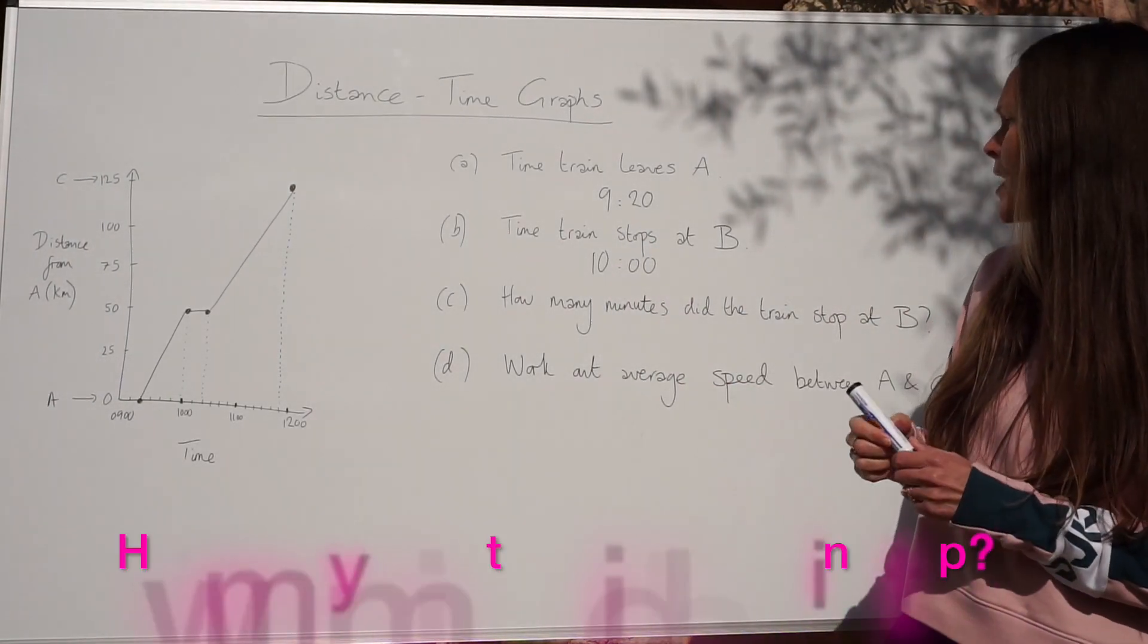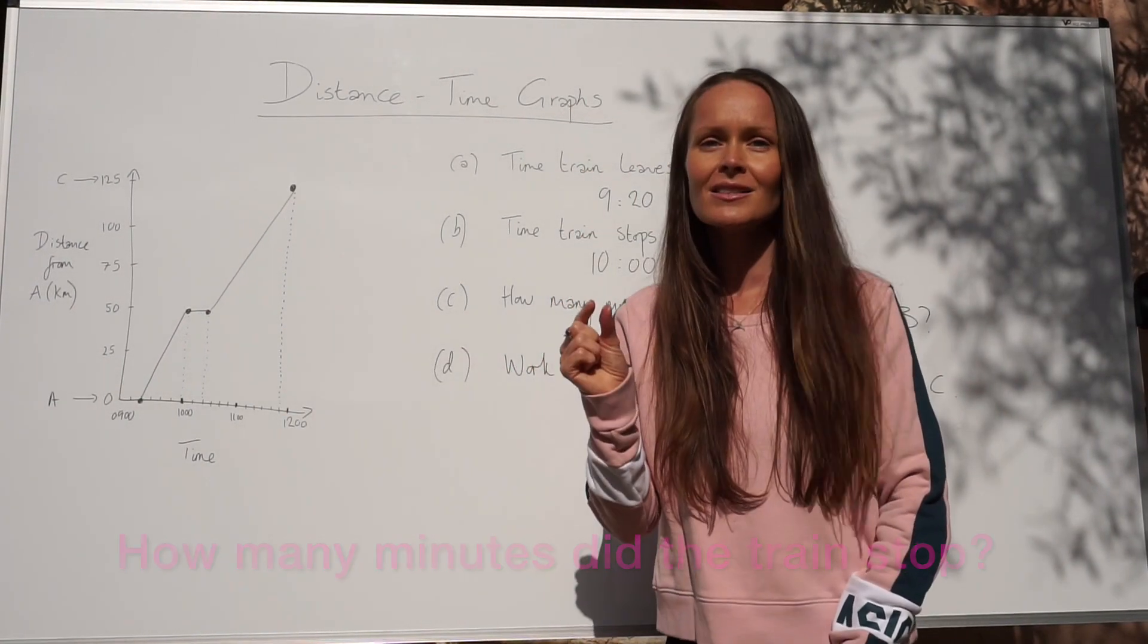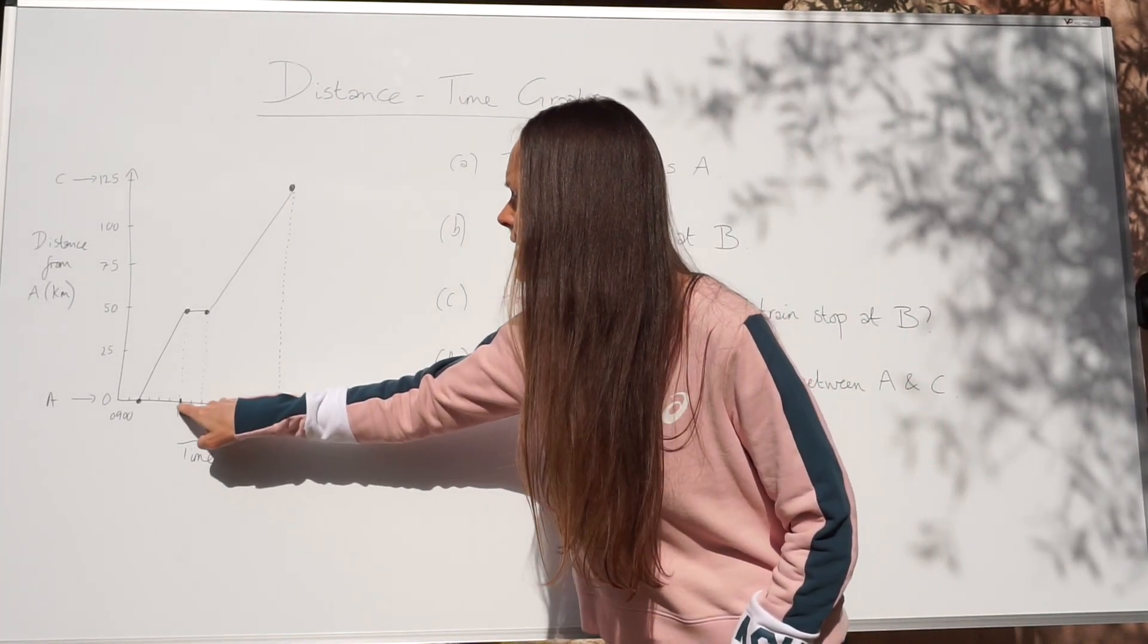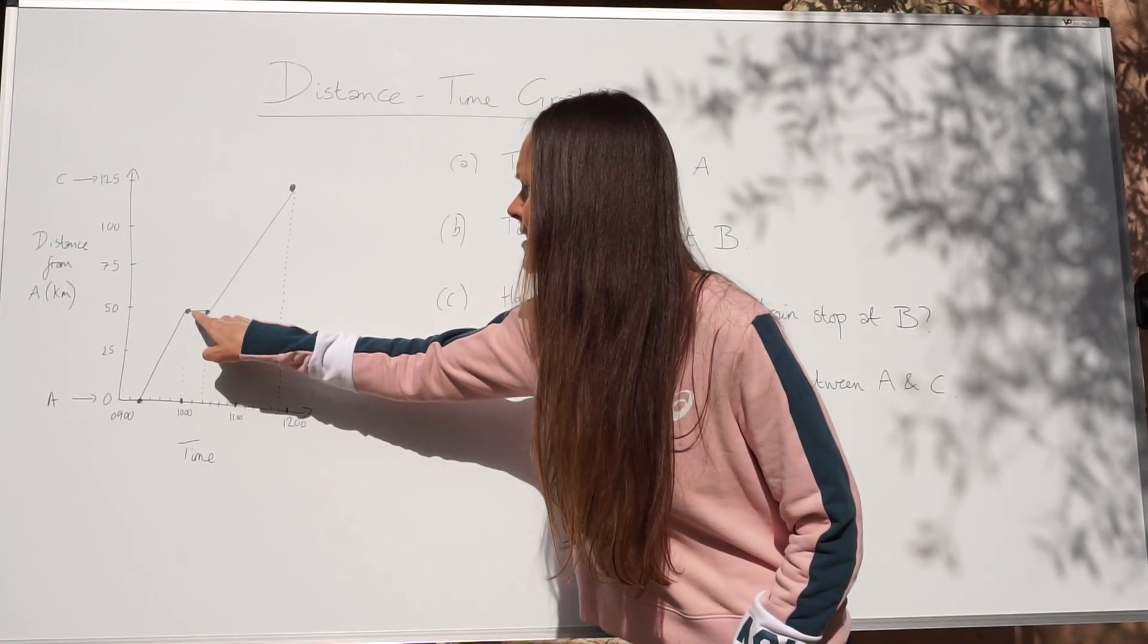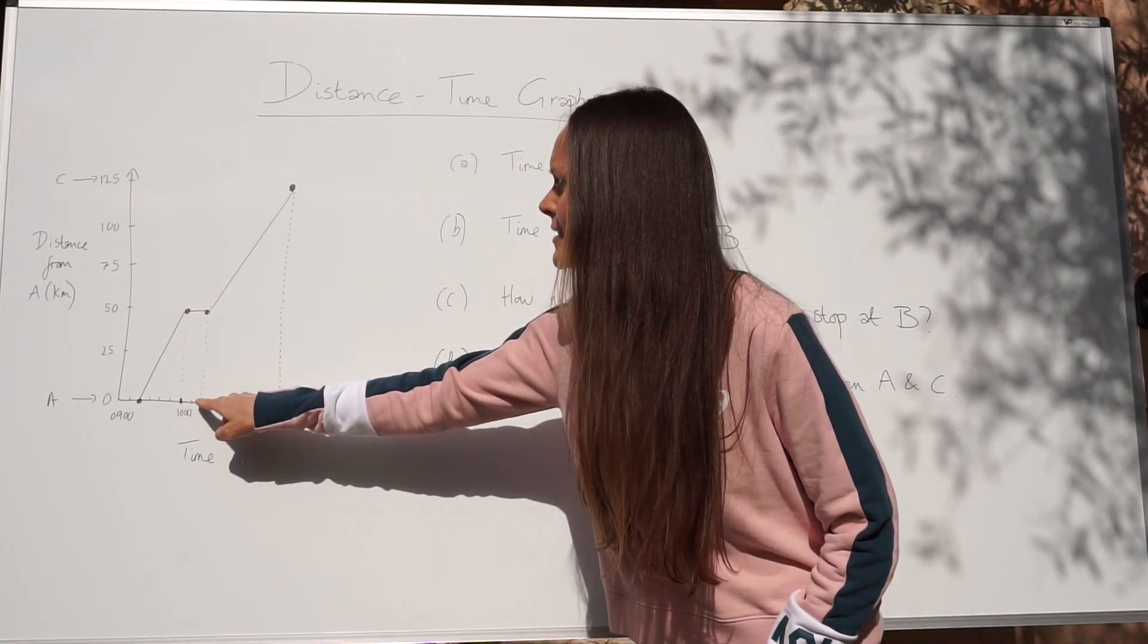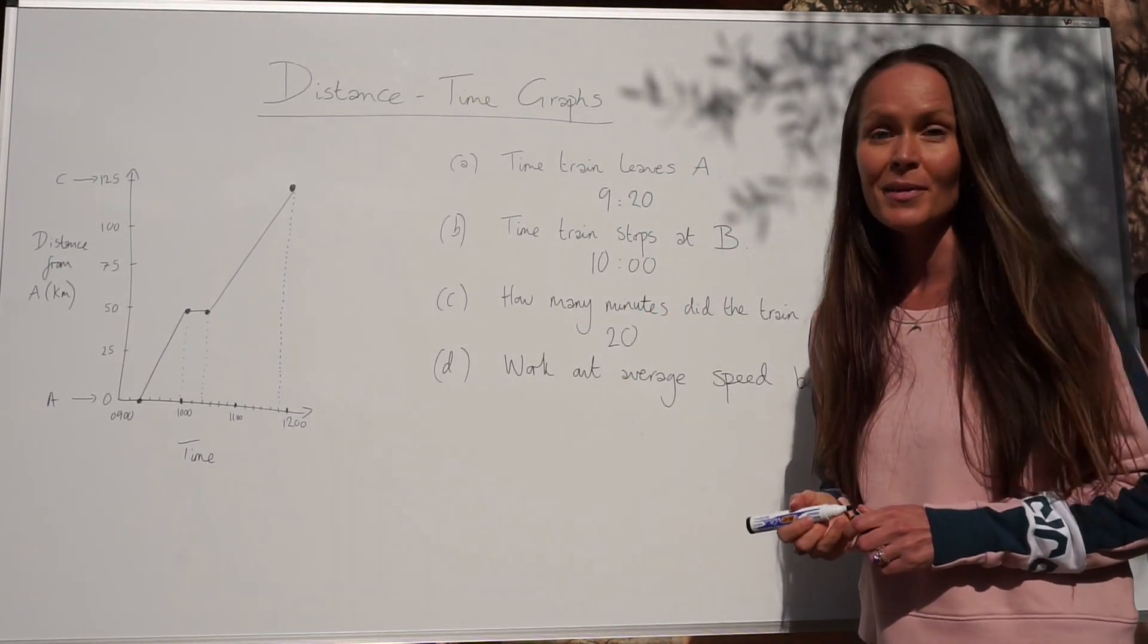For part C, how many minutes did the train stop at B? So remember I just said each little square along the bottom is equal to 10 minutes. So you can see there are two little squares in line with the horizontal part of the graph.